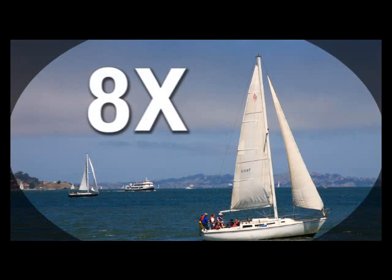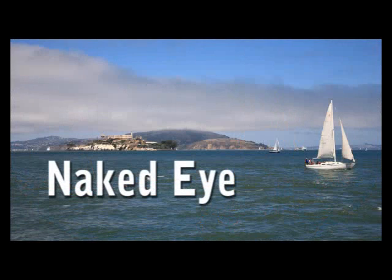For example, a pair of 8x42 binoculars has 8x magnification and a 42mm objective lens. These binoculars will display an object image 8 times larger than the same object seen with the naked eye.